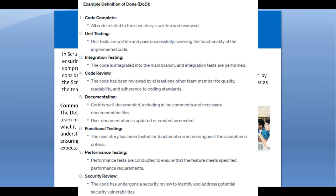The product increment is basically the end product of the sprint. Definition of Done is a comprehensive list of criteria that must be satisfied for a product backlog item to be considered complete and potentially shippable. The Definition of Done is agreed upon by the Scrum team during sprint planning or at the beginning of the project, and it evolves as the team learns and adapts.